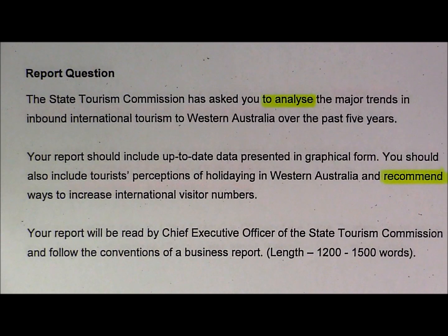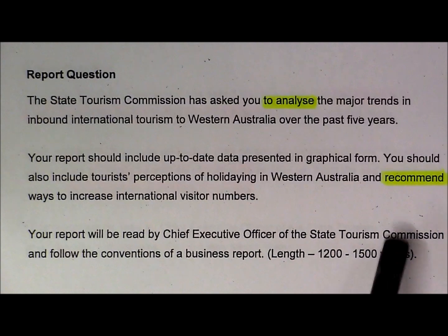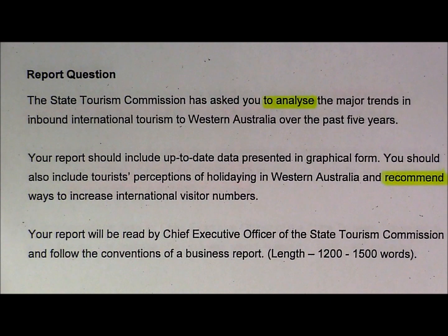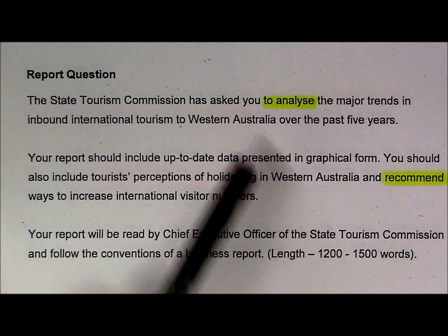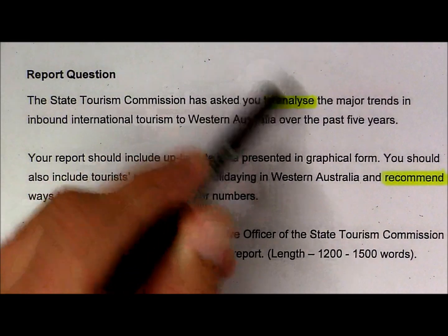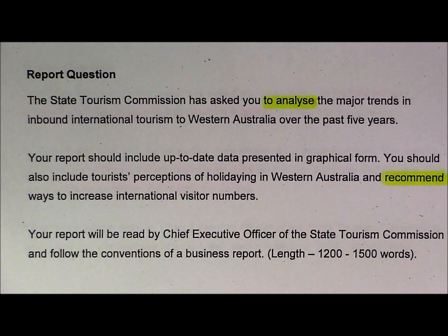Let's start with the task words. The main task words here are to analyse — looking at analysing the major trends in inbound international tourism — and also to make some recommendations, to recommend ways to increase international visitor numbers. So these are the two key task words: analyse, and then make some recommendations.